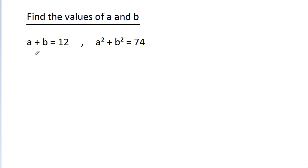In this video, we have given that a minus b is equal to 12 and a squared minus b squared is equal to 74. Then find the values of a and b.